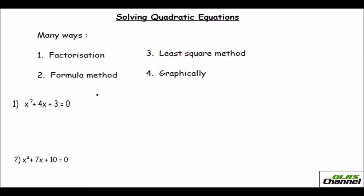I'm going to teach you the factorization method. First, look at the quadratic equation given and bring it into general form — ax squared plus bx plus c. Then check if there is any common factor in the equation. If there is, take it out by dividing throughout. Then check whether the x squared term has a bare coefficient, meaning a equals one.